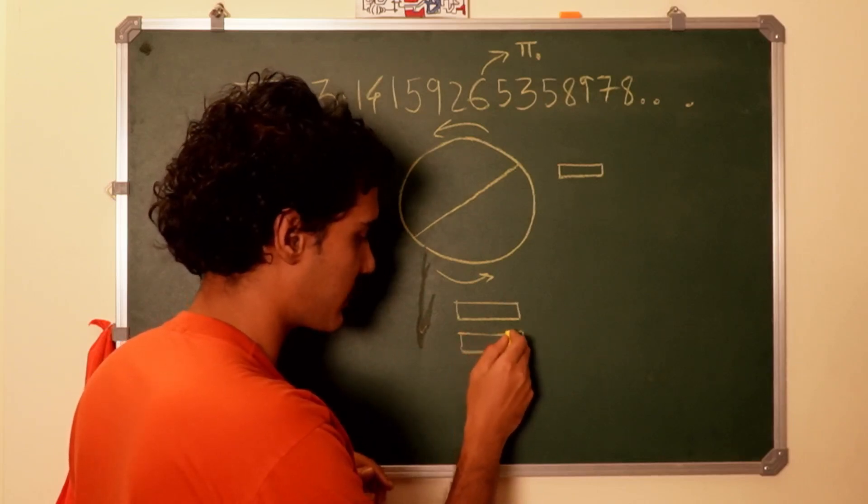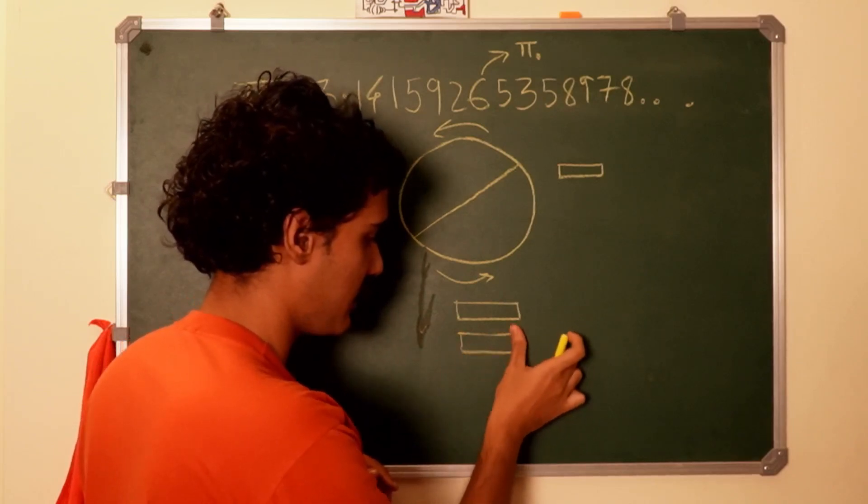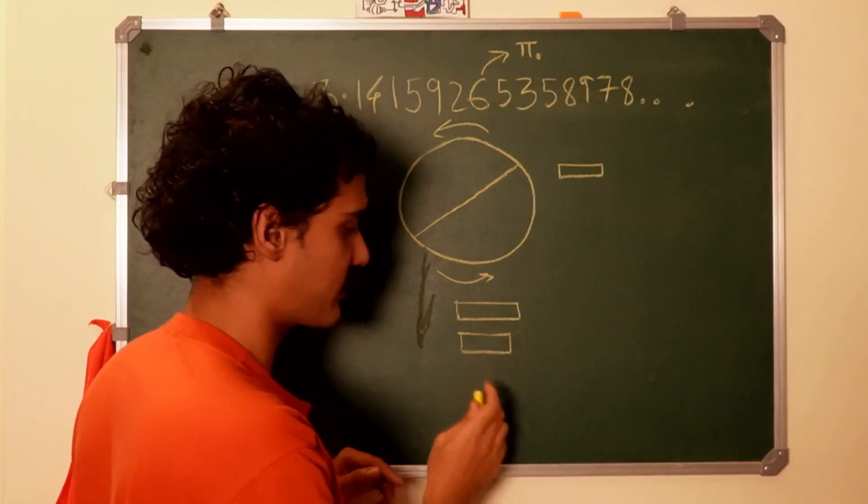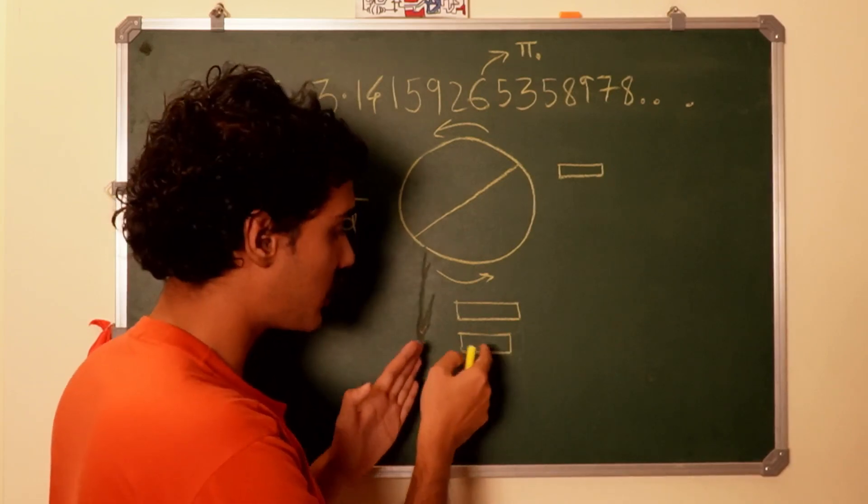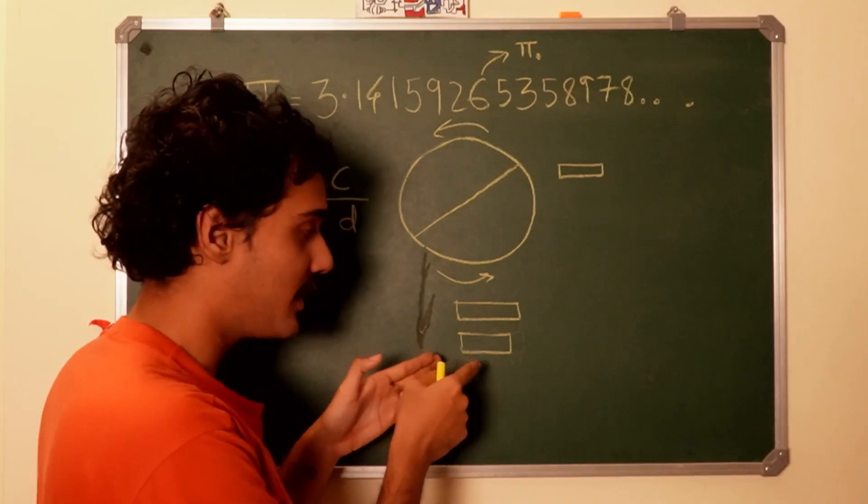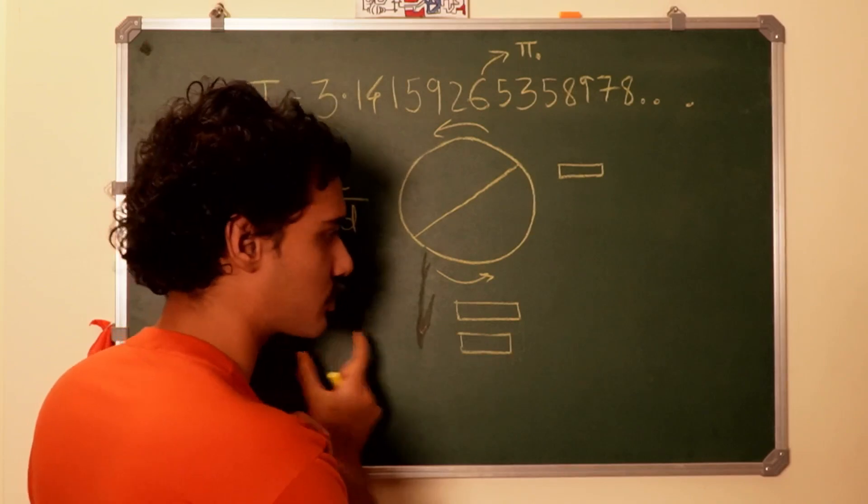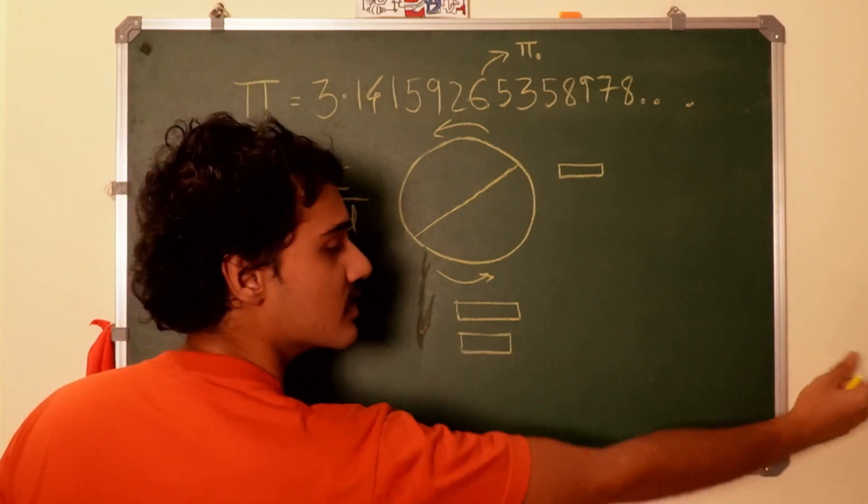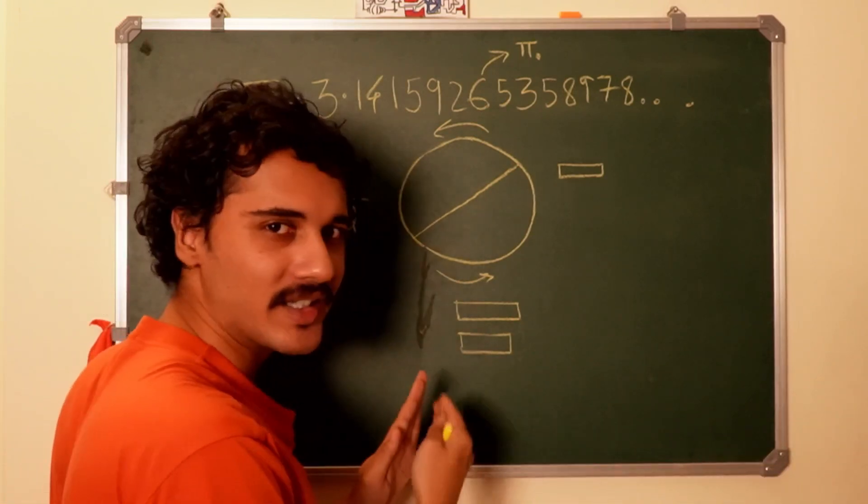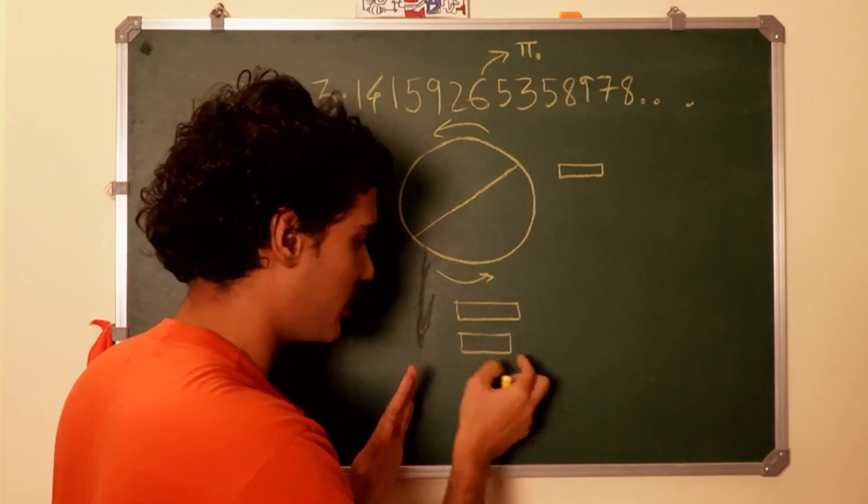Now Einstein showed in 1905 that the length of this stick, this meter scale, actually shrinks. So if it's moving it's this. Now of course to keep it here to show you that it's shorter I have to keep subtracting the distance because it's moving, so imagine that I have subtracted the appropriate distance with each second so it remains here. So it's shorter.